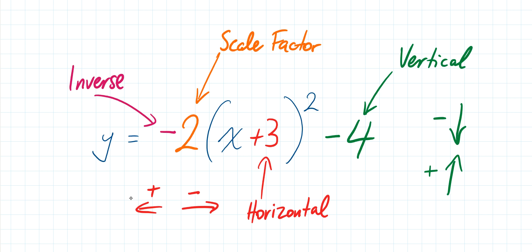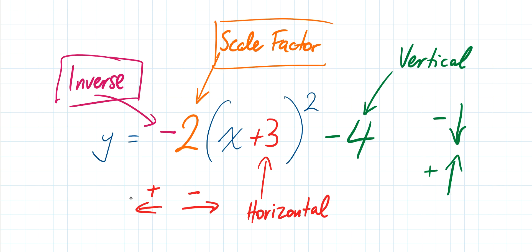So just to recap: you've got your inverse part, which leaves it the right way up or flips it upside down — making it either a happy face or a sad face. You've got your scale factor which affects the width of the parabola — more than 1 means it's going to be thinner, less than 1 means it's going to be wider. You've got your horizontal transformation that shifts it left or right, and then your vertical transformation which shifts it up or down.